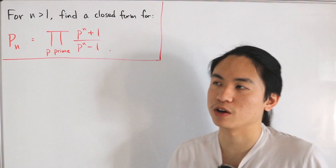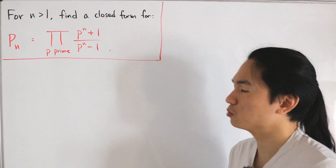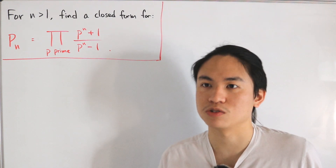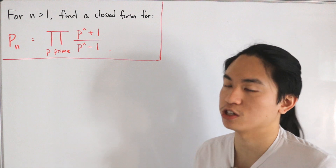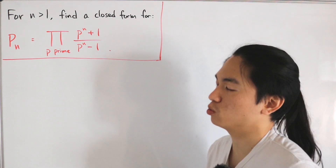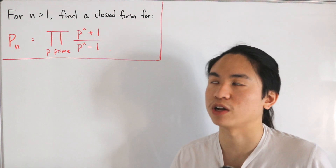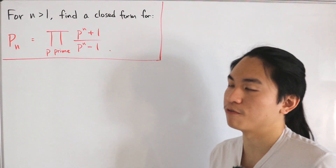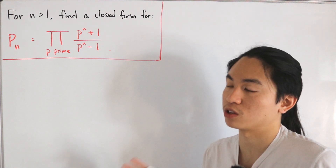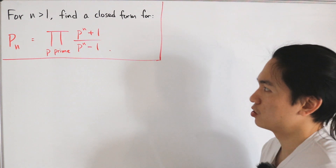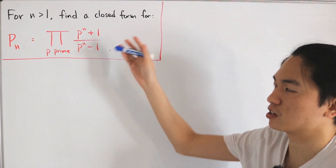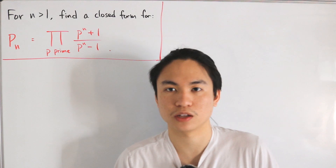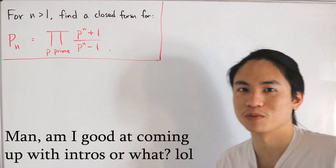This video will be short — similar to the n equals 2 case. To find the closed form, we're going to use the Riemann zeta function's Euler product representation, specifically the product over prime indices of a Dirichlet series. Using that, we'll rewrite things and it closes from there.